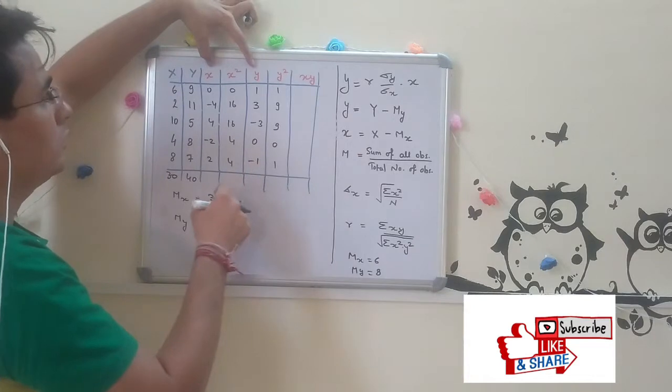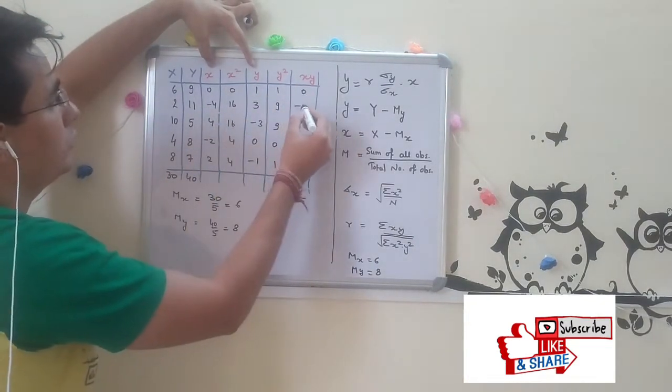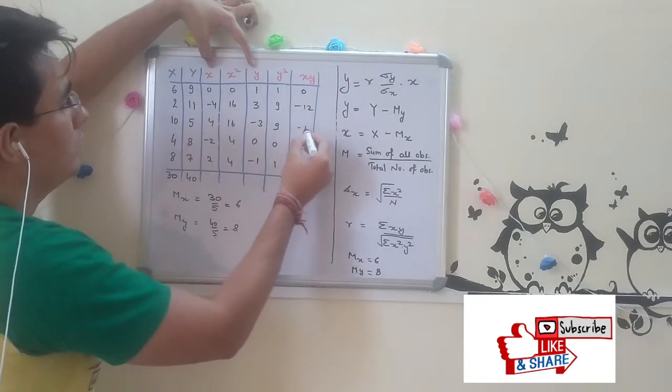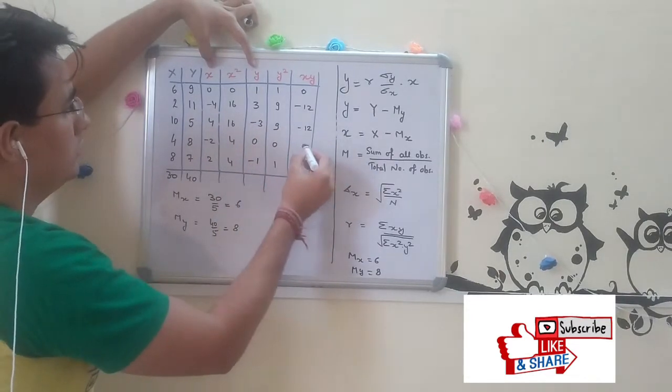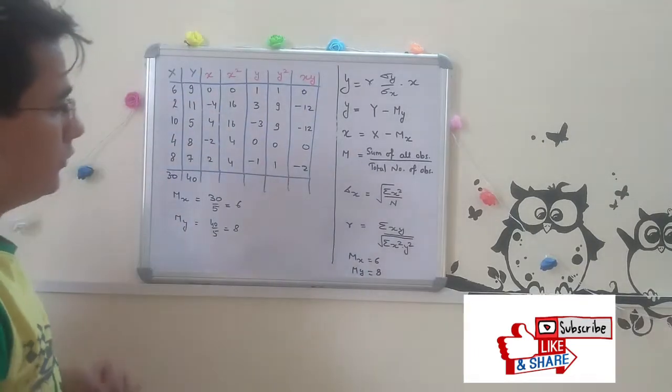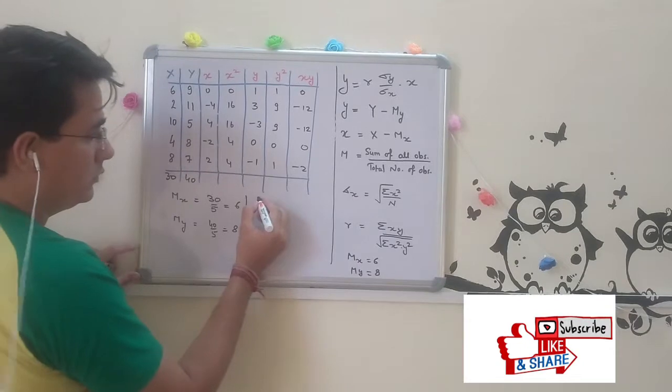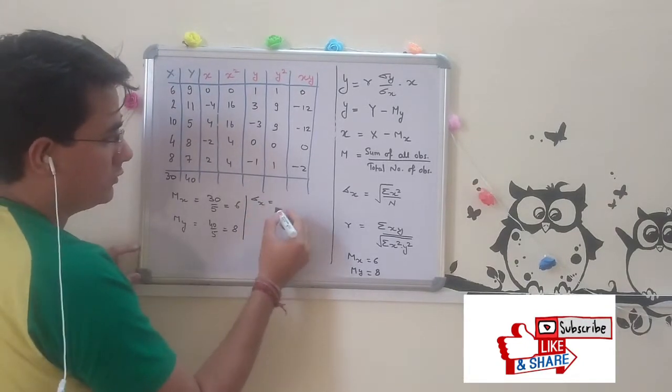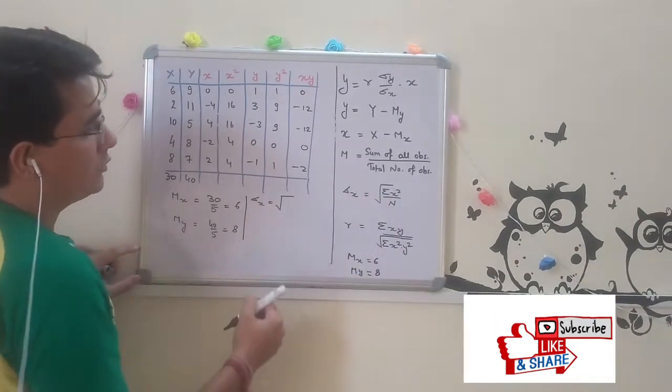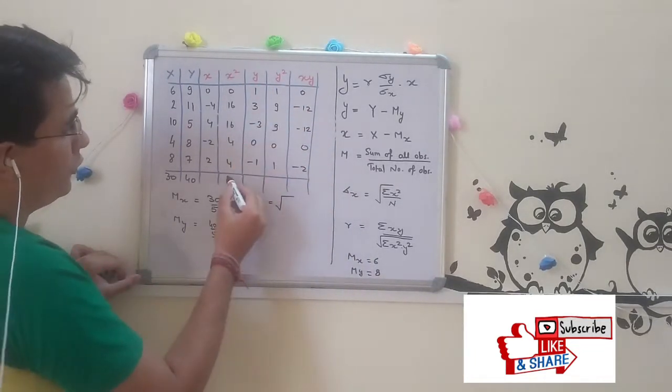We multiply this by this in the formula: 0, minus 12, minus 12, 0, minus 2.